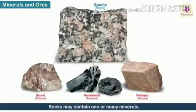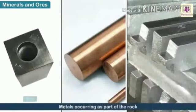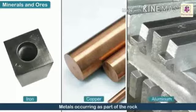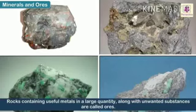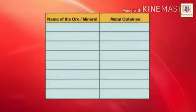Rocks may contain one or many minerals. Metals contained as part of the rock include iron, copper and aluminium. Rocks containing useful metals in large quantity along with unwanted substances are called ores.